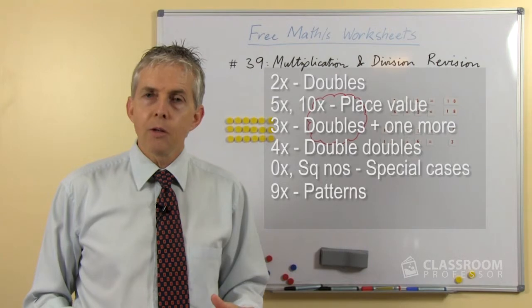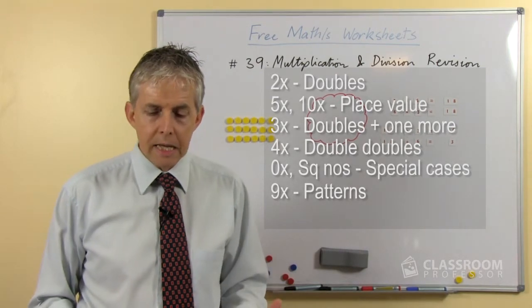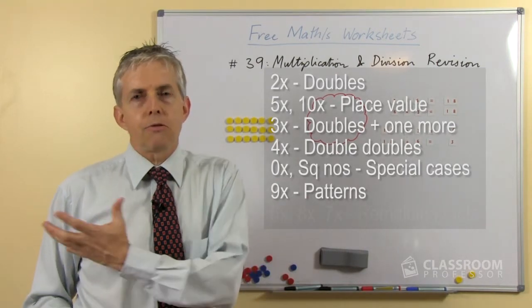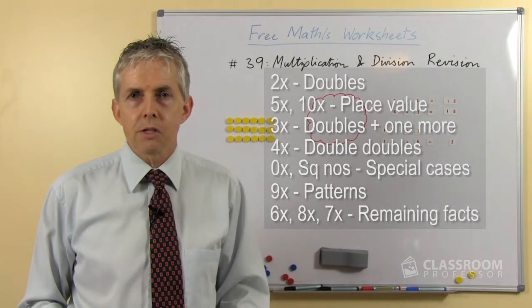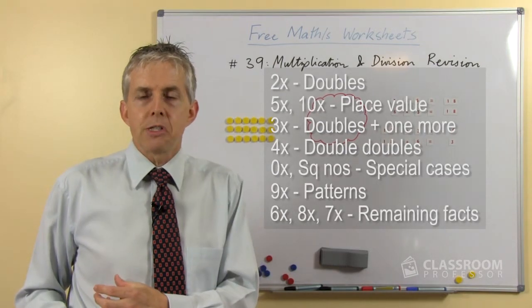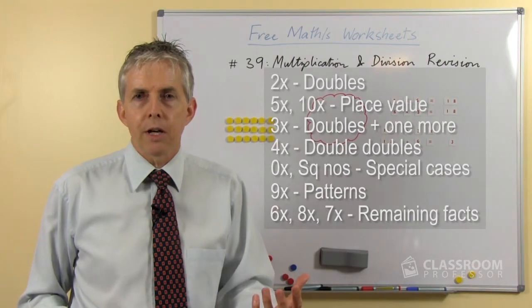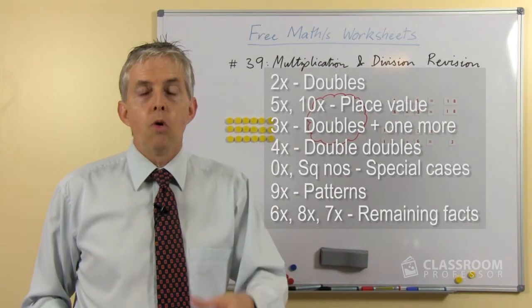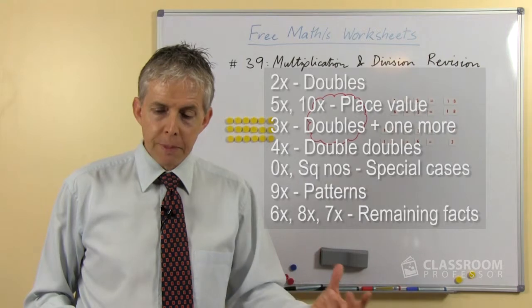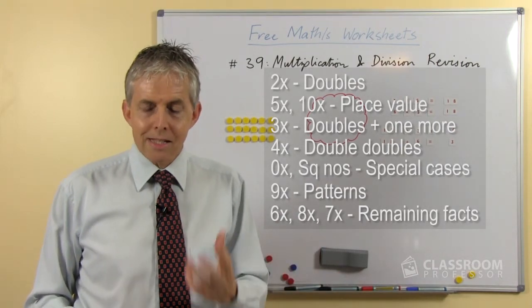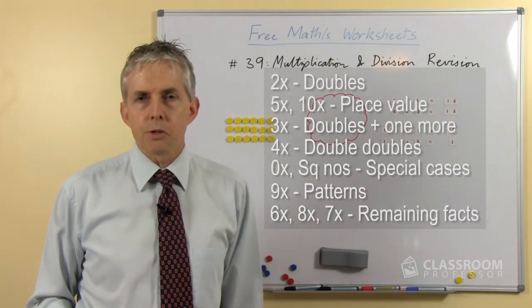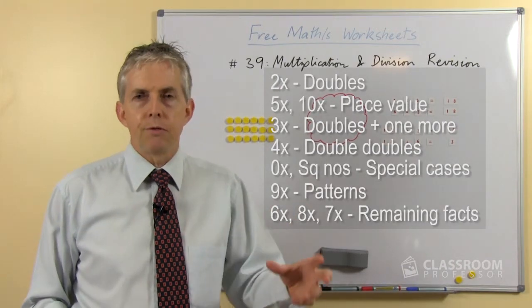Multiplying by 9 with all the patterns that we can find there, and then the last 3 sets, the most difficult number facts: the 6's, 8's and 7's. For the 6's we build up from known facts, so build from 5 times, or from 3 times and then double. For the 8's we can do double, double, double. And the 7's, there isn't a simple strategy for the 7's but again we build from known facts.